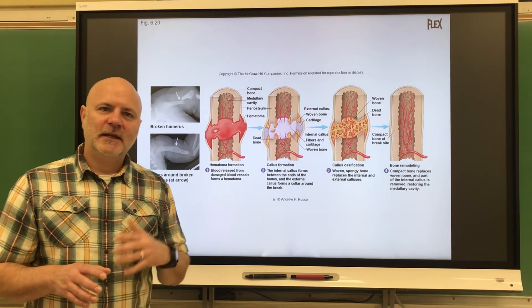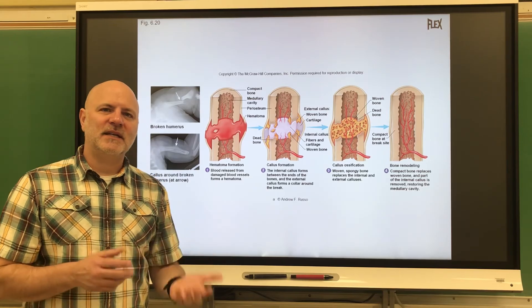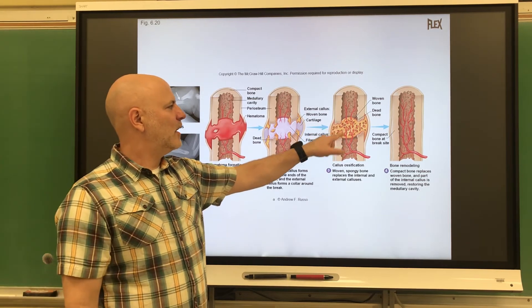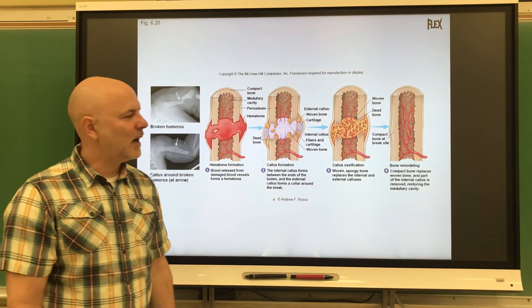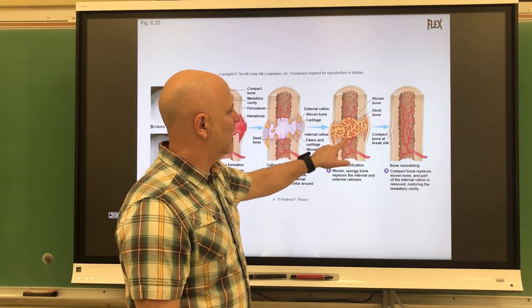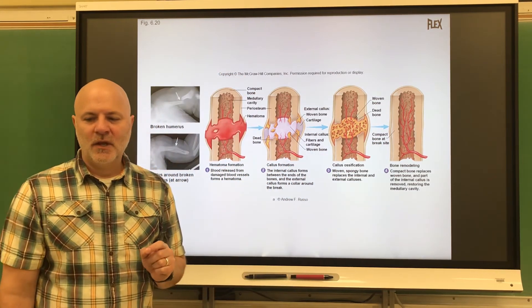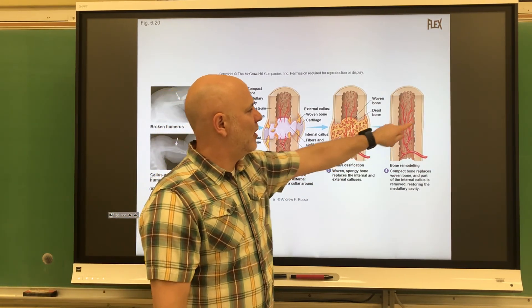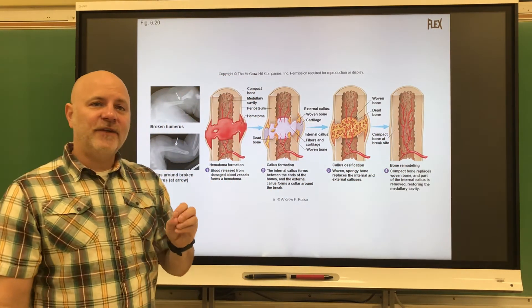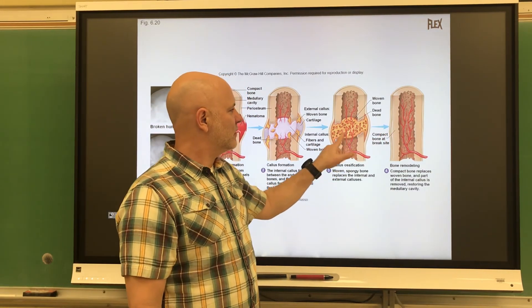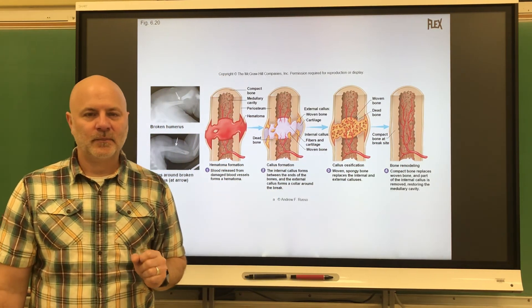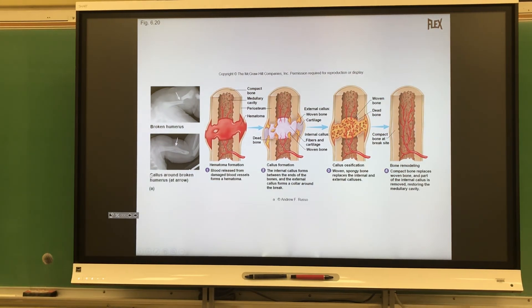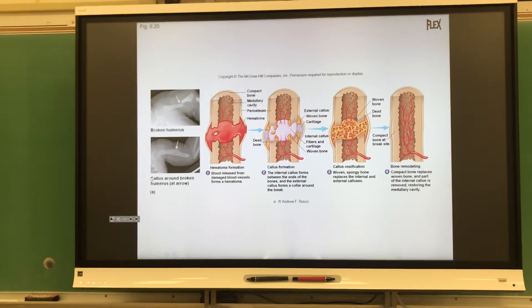Next is bony callus formation, where osteoblasts convert the fibrocartilage into spongy bone — this takes about two months, though a broken bone is typically stable enough to remove a cast around six weeks. Finally, bone remodeling occurs: osteoblasts build new compact bone on the edges, and in a long bone, osteoclasts remove the spongy bone from the medullary cavity, remaking it.